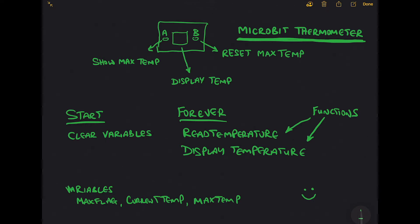So we've got the micro:bit here. If we press button A, we want to display the maximum temperature. We've got a thermometer that's showing the current temperature all the time, but it does record the maximum temperature. If we press button A we want to show the maximum temperature. We also want a way of clearing the maximum temperature, so we'll save that for button B.